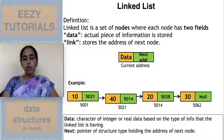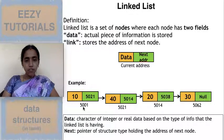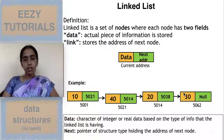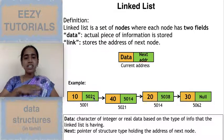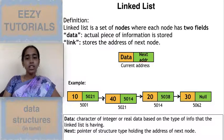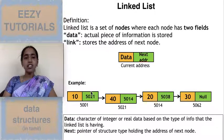10 is stored at address 5001, 40 is stored at 5021, 20 is stored at 5014, and 30 is stored at 5062. All my data are scattered and stored — not like an array where all data is stored in continuous memory. Each data is stored in a different memory location.